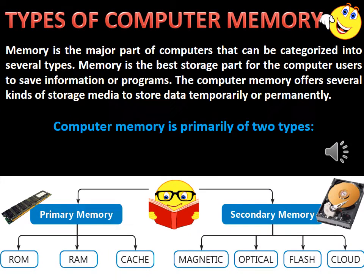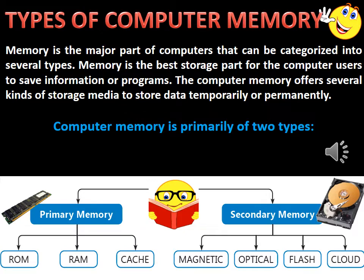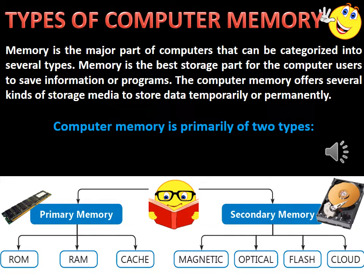Now we will understand the various types of computer memory. Memory is the major part of computers and can be categorized into several types. It is the best storage part of the computer used to save information or programs, and offers several kinds of storage media to store data temporarily or permanently. Computer memory is primarily of two types: primary memory, which includes ROM, RAM and cache; and secondary memory, which includes magnetic, optical, flash and cloud storage.